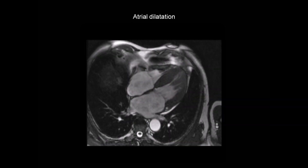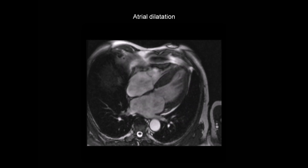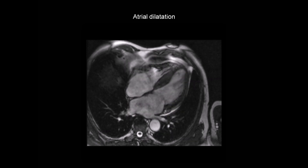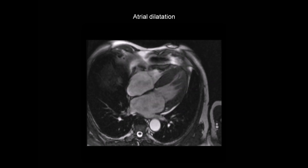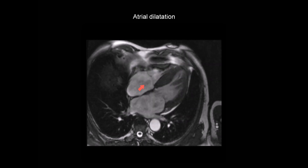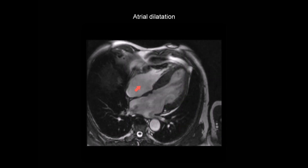A consequence of myocardial thickening is diastolic impairment and elevation of ventricular filling pressures, which increases the stretch on the atria. So in this patient with cardiac amyloidosis, we can see myocardial thickening, but also dilatation of the atria as a consequence of these raised filling pressures.